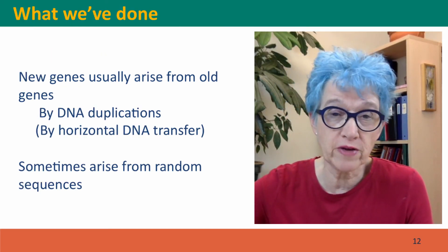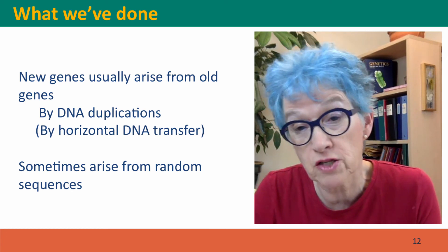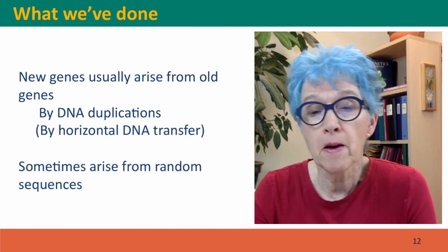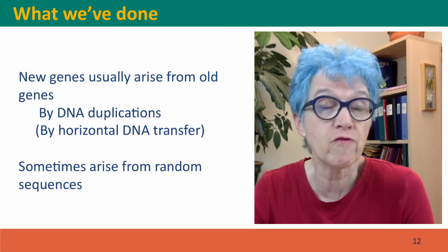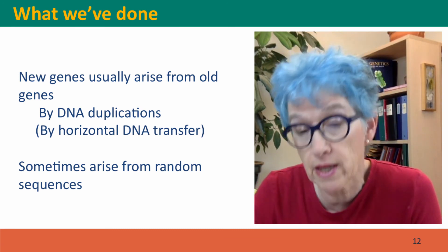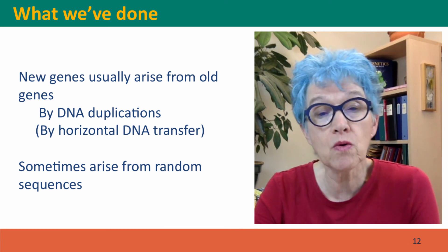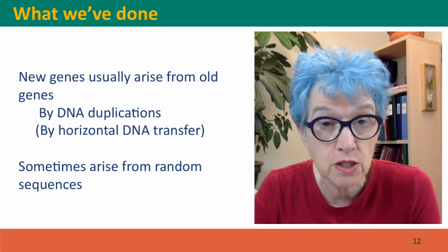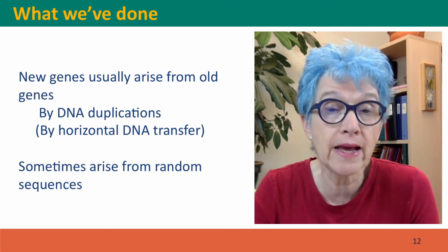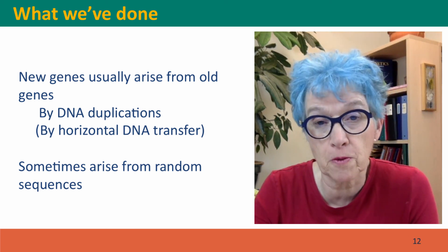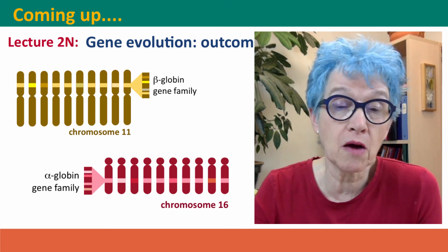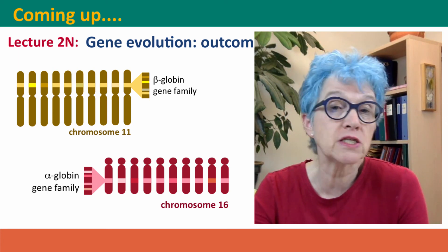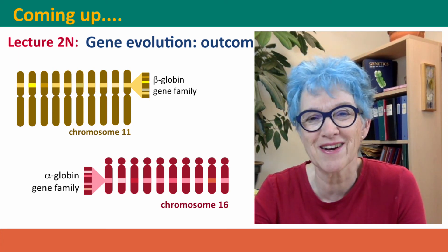So what we've covered: new genes usually arise from old genes, most commonly by duplication of DNA already in the cell, but occasionally by transfer of genes that evolved in some other organism whose DNA was brought into the cell. We also talked about how genes can arise from random sequences if there's just by chance a signal for transcription and a reading frame long enough to generate a functional protein. Coming up next, we're going to think about the outcomes of gene duplication events, particularly gene families and diverging gene functions.